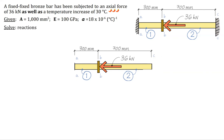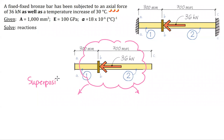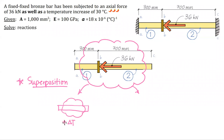When we have this structure and we're hitting it with a temperature increase, we can use ideas of superposition to get a sense for which way these reactions are going to point. I'm going to split out the behavior by thinking just about the temperature increase on the left. For a temperature increase in a constrained bar, the material wants to expand and elongate, but the supports prevent it from doing so.